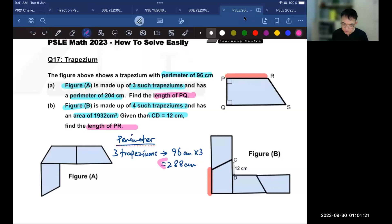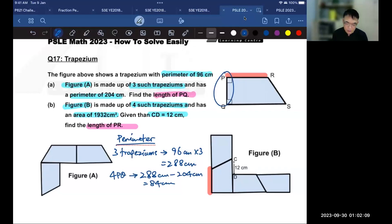If I were to now take the perimeter of the three trapeziums that we found earlier and subtract away the perimeter of figure A, that will give me the four lines that we were talking about. And each of them is equal to PQ. So I'm going to write 4PQ. And I'm going to take 288 and subtract 204. This will give me 84 centimeters. So 84 centimeters is 4 times of this length. So to find PQ, I'm going to divide that by 4. So PQ would then be 84 centimeters divided by 4 to give me 21 centimeters.